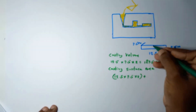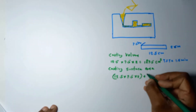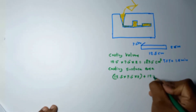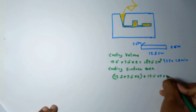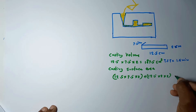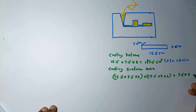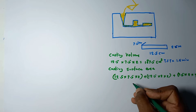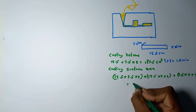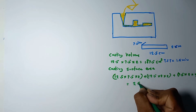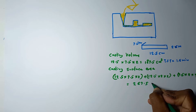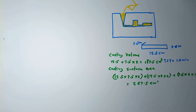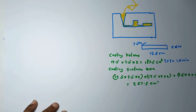For the surface area, we account for two surfaces: 12.5 × 2 × 2 × 2, plus two more surfaces: 7.5 × 2 × 2. The casting surface area is equal to 267.5 square centimeters.